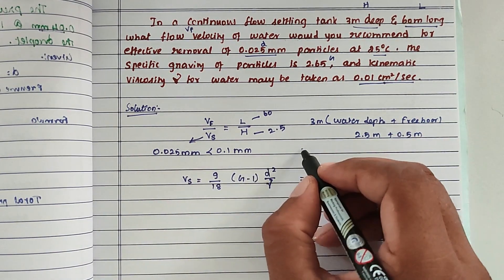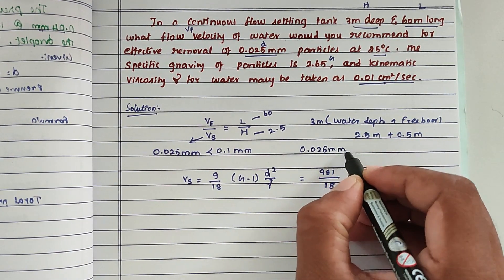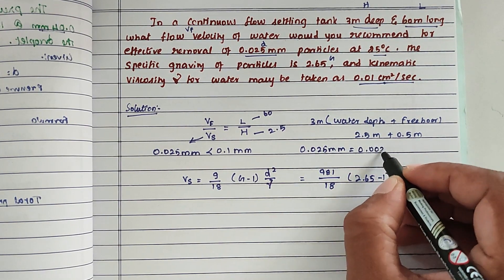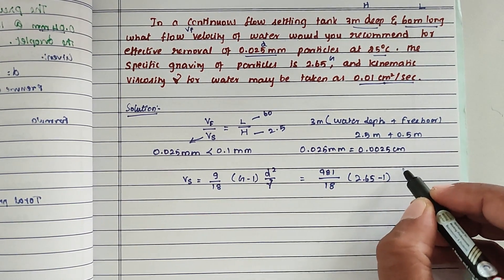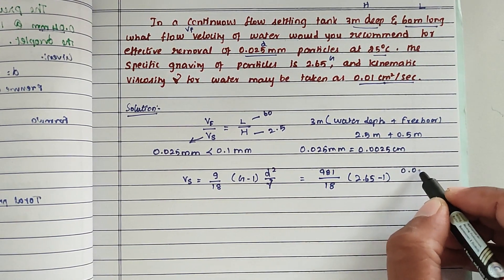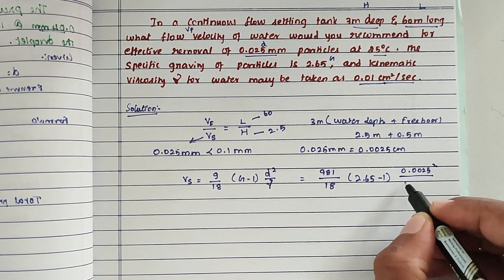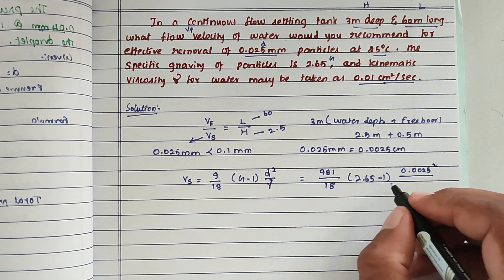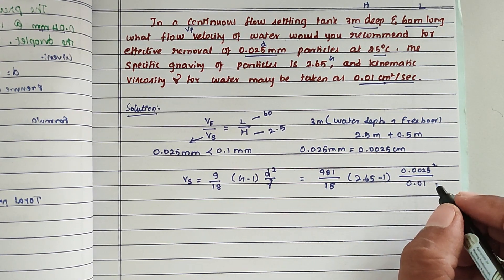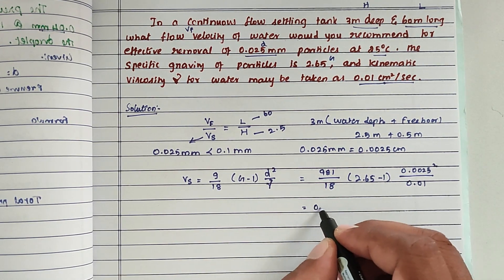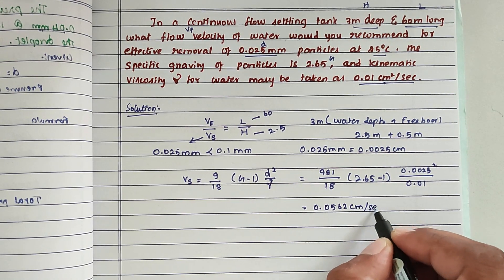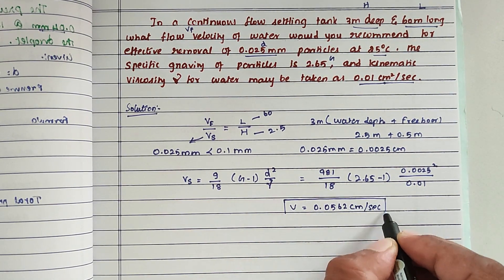The diameter is 0.025 mm, converted to centimeters that is 0.0025 cm. Substituting: Vs = (981 / 18) × 1.65 × (0.0025)² / 0.01. Solving this gives a settling velocity of 0.0562 centimeters per second.